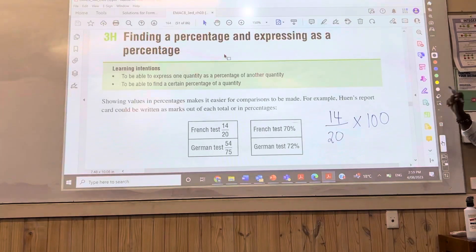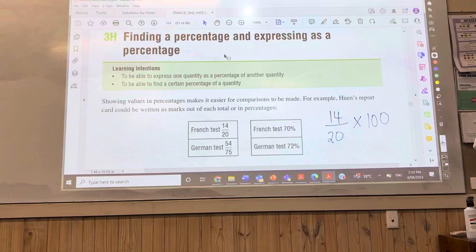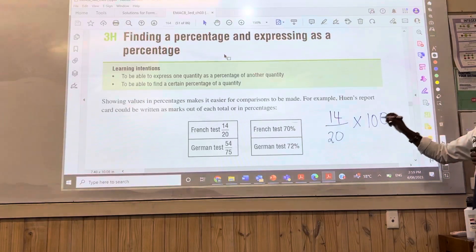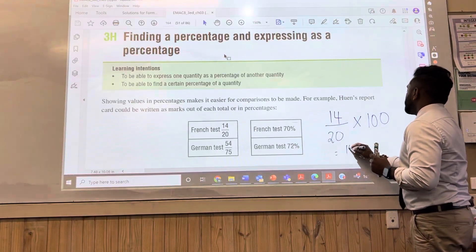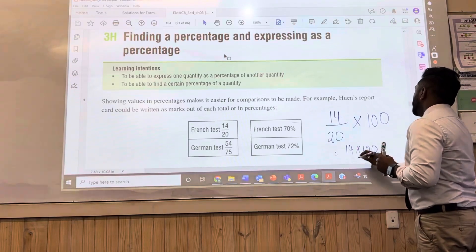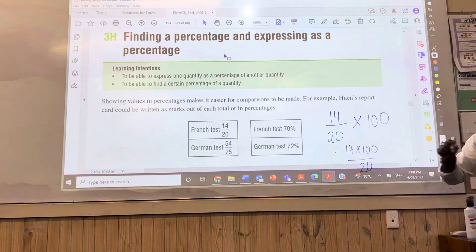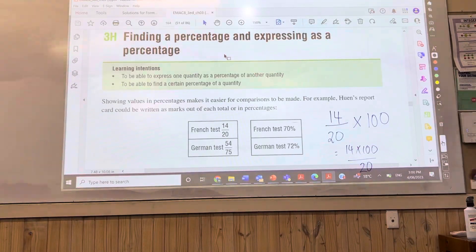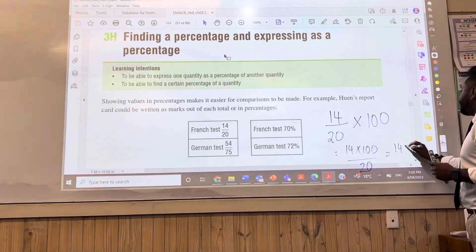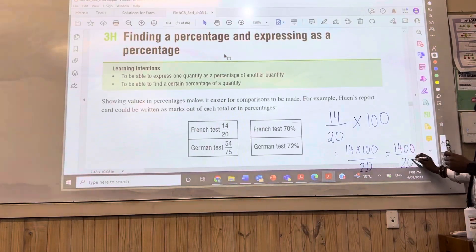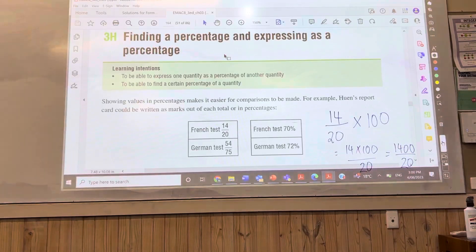Now Amar, how do we do this part? How do we simplify this? That's one way. So 14 times 100 over 20. What does that become now? Oh, not 140. No? 1,400. Over 20. Then you've got to work this out. How do you work this out now, Amar? Divide it. So you cut these zeros. Now you've got 140 over 2, which is 70%. Okay, great. Amar, well done.